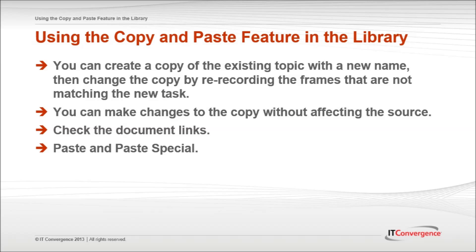You may find you have a topic for a task almost identical to a task you're just about to record. In that case, you can create a copy of the existing topic with a new name, then change the copy by re-recording the frames that are not matching the new task. This is possible because when you create a document, the developer creates a new document with a new document ID. The new copy and the original source document are not directly linked, so you can make changes to the copy without affecting the source.